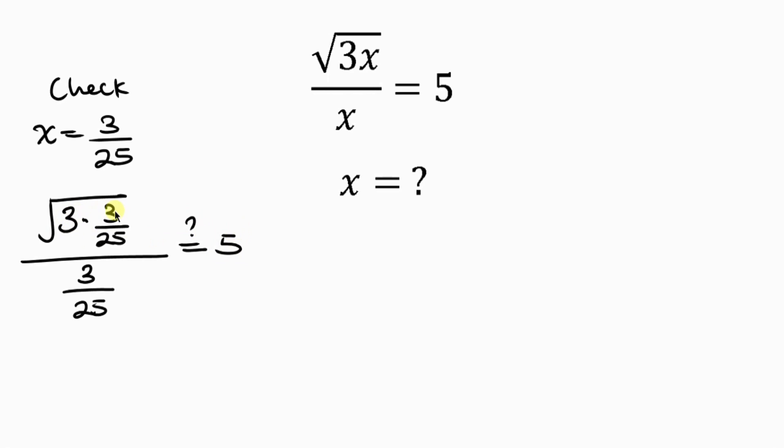Now, 3 times 3 is 9, so we have the square root of 9 all over 25, all over the denominator 3 over 25.